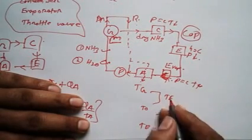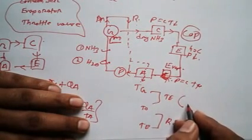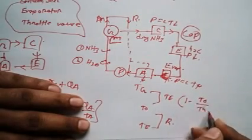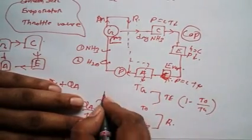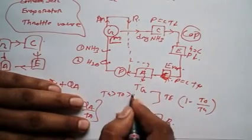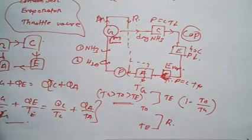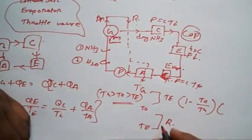What is the efficiency of engine? As you know, 1 minus T naught upon TG. All these terms will be like this: TG would be greater than T naught would be greater than TE, otherwise the equation will become wrong.